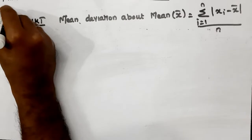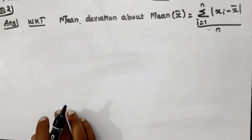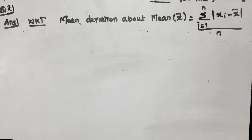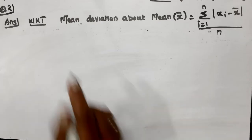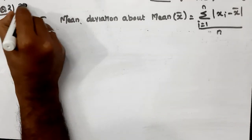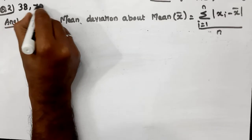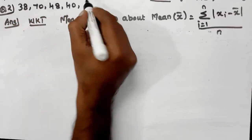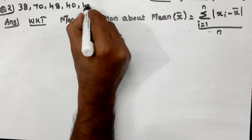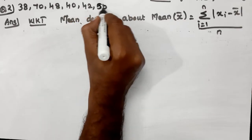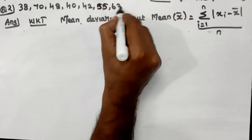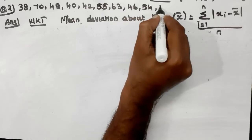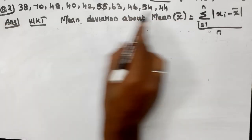Question number 2. The data values are: 38, 70, 48, 40, 42, 55, 63, 46, 54, and 44.